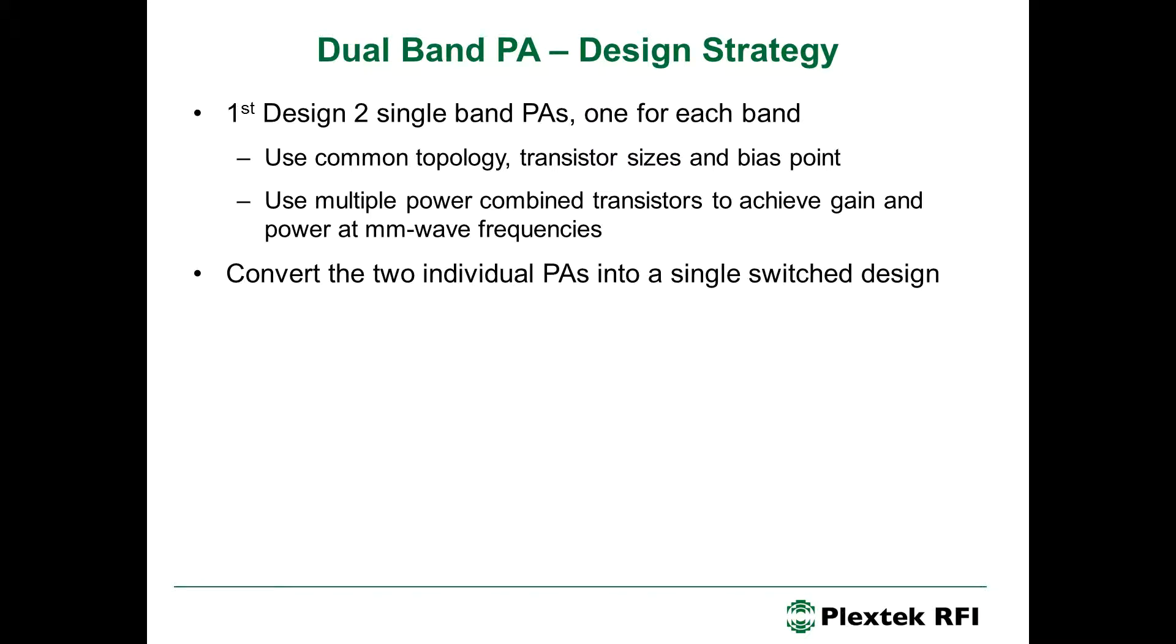Once we have our two individual power amplifier designs, it's a matter of converting those two designs into a single switch design. So, we'll be looking to switch certain key RF elements such as lengths of transmission line. We tend not to use inductors at millimetre wave, but rather use lengths of transmission lines. So, we'll be looking to alter the effective length of transmission lines. And then also, the other popular matching component are, of course, capacitors or MAM capacitors. And we'll be looking at a means of switching those in order to alter the effect of capacitance between the two bands.